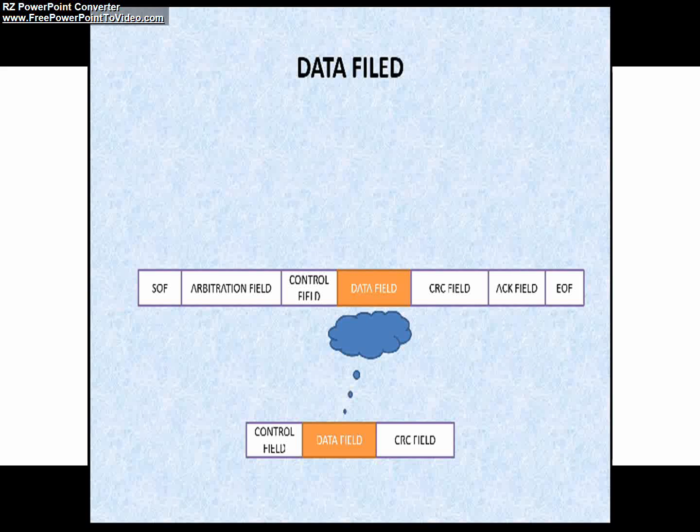The next field is data field. The data field comprises of actual information which is to be transmitted. The number of data bytes may vary from 0 to 8 bytes and the transmission starts with the MSB first.